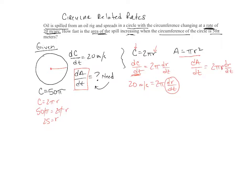And the right side here becomes 2 pi r dr dt. Remember, whenever you take the derivative of that variable, you need to put the change that goes along with it. In this case, it's an r, so we're going to put dr dt.